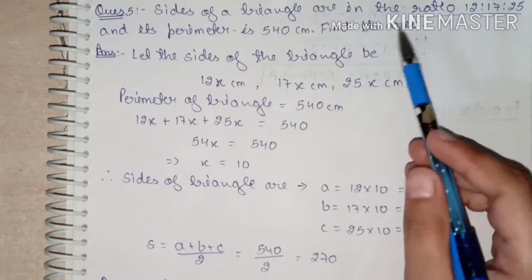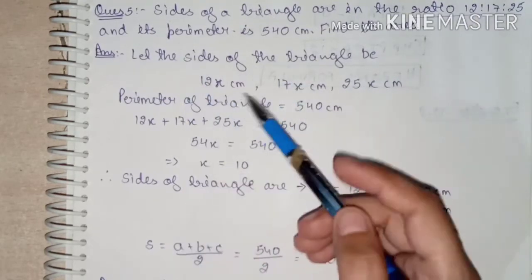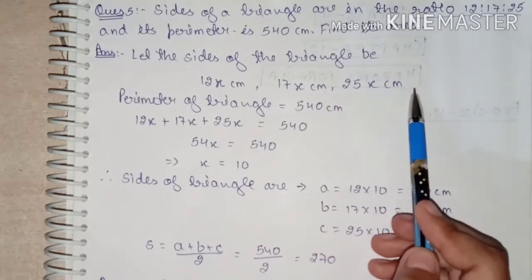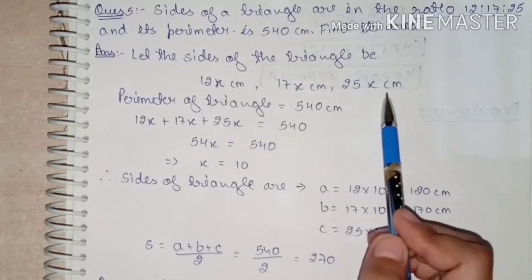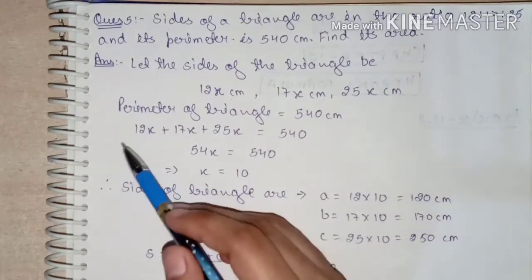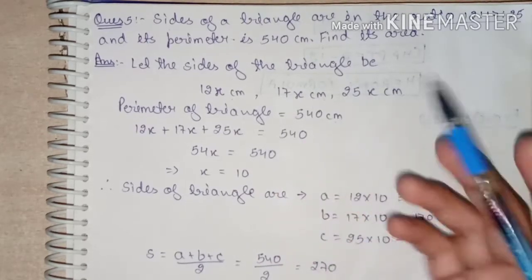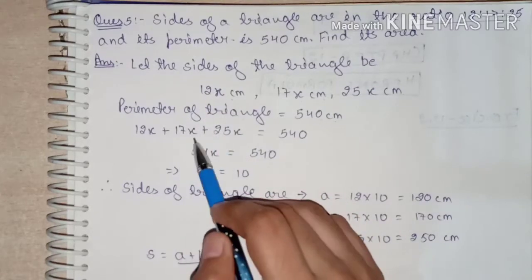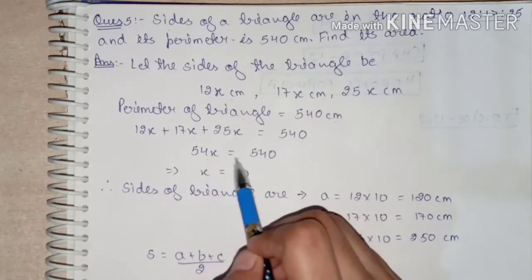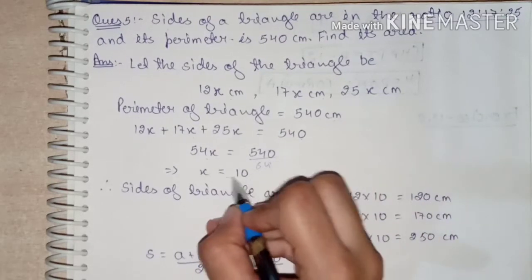Whenever sides are given in ratio, we attach a variable. So let the sides of the triangle be 12x, 17x, and 25x cm. Now we use the perimeter: 12x + 17x + 25x = 540. This gives 54x = 540, so x = 10.